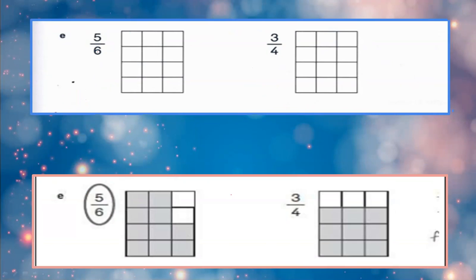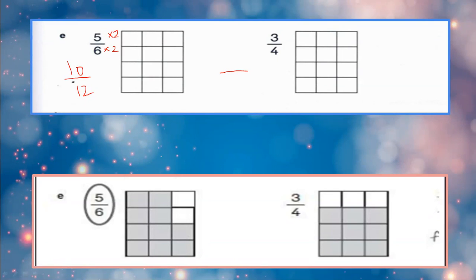The last part is E: 5 upon 6 on one hand and 3 upon 4 on the other. Both grids have 12 boxes. For 5 upon 6: converting 6 into 12 by multiplying by 2, I apply the same to the numerator — 5 becomes 10, giving 10 upon 12. For 3 upon 4: converting 4 into 12 by multiplying by 3, I apply the same — 3 becomes 9, giving 9 upon 12. So color 10 boxes for the first grid and 9 boxes for the second grid.